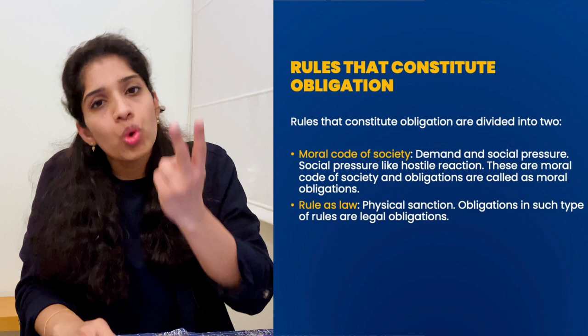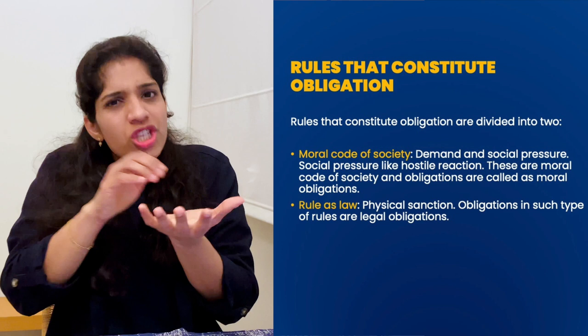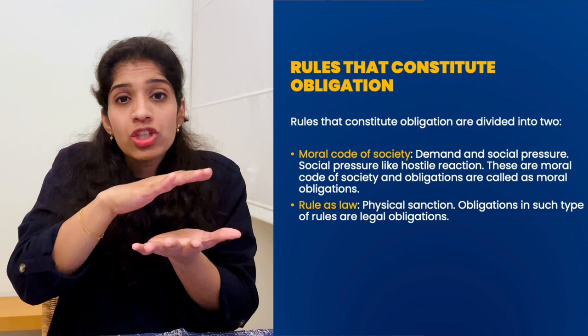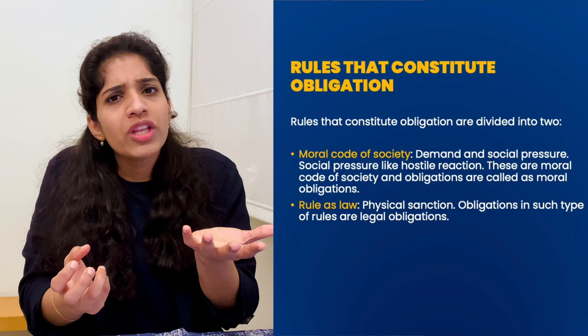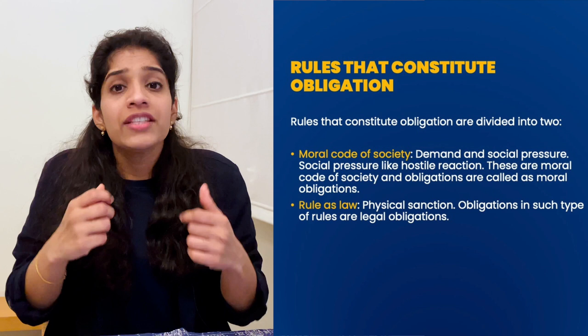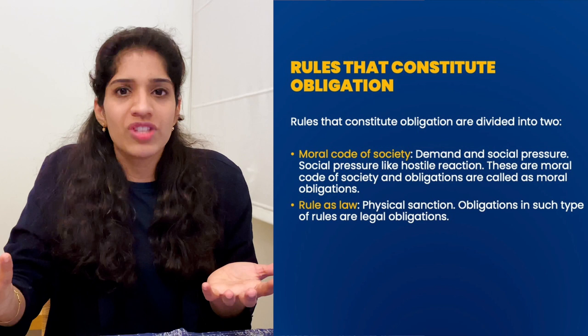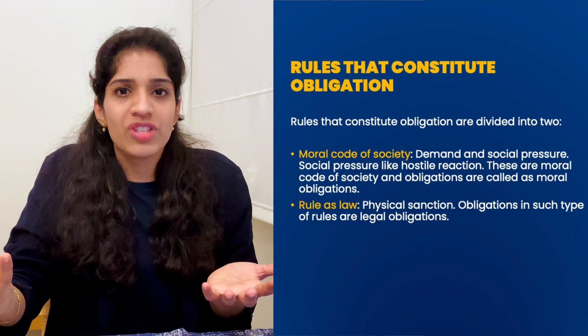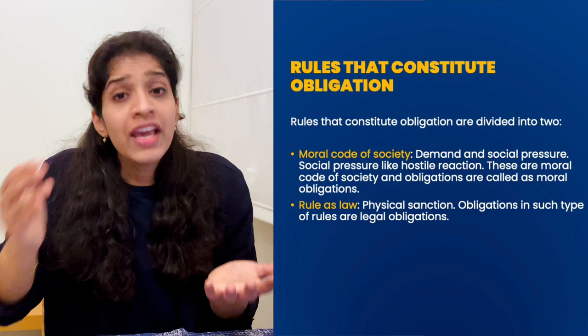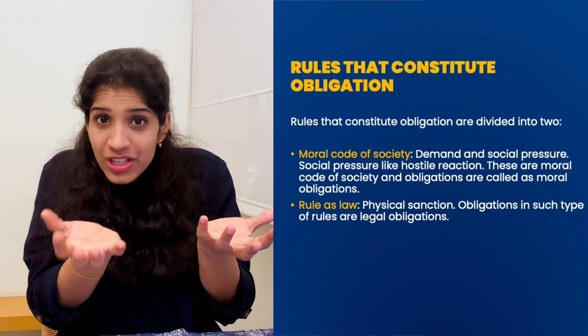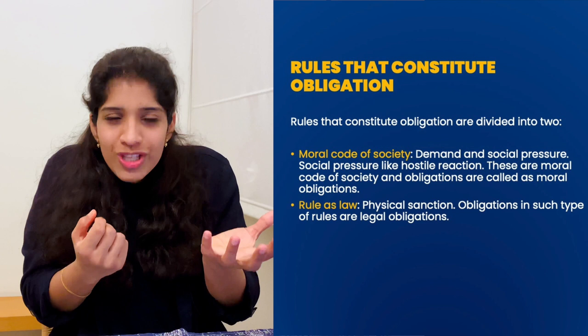HLA Hart, rules which constitute obligation को दो तरीके से divide करते हैं। पहला: कुछ rules में सिर्फ demand होती है और अगर follow नहीं करते तो social pressure impose होता है — जैसे society hostile reaction दिखाती है या shame feel करवाती है। ऐसे rules को moral code of society कहते हैं और इनमें जो obligation है वो moral obligation है। दूसरा: जब कोई rule न follow करने पर physical sanction impose किया जाता है, तो वो rule law बन जाता है और उसके अंदर जो obligation है वो legal obligation बन जाती है।